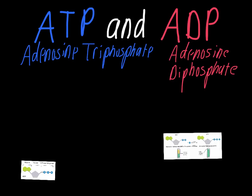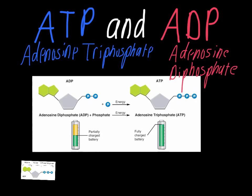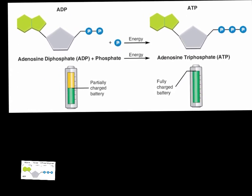If we get into the differences between ATP and ADP, that's where we get to this diagram here. We've got ADP on this side and then ATP on the other side. The key difference, again, has to do with the number of phosphates. You can see adenosine diphosphate only has two of those phosphate groups, while adenosine triphosphate has all three.